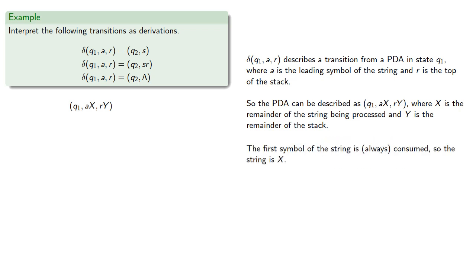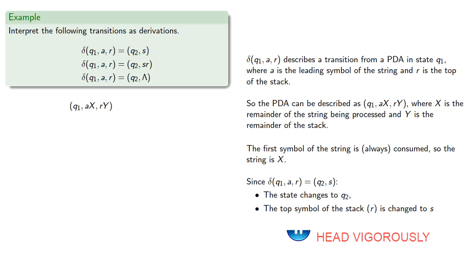Now the first symbol of the string is always consumed, so what's left is x. And since δ(q₁, a, r) is (q₂, s), then our state changes to q₂, and the top symbol of the stack, which was r, is changed to s. The rest of the stack is unchanged, so the stack is now sγ. And so (q₁, ax, rγ) derives (q₂, x, sγ) in one step.